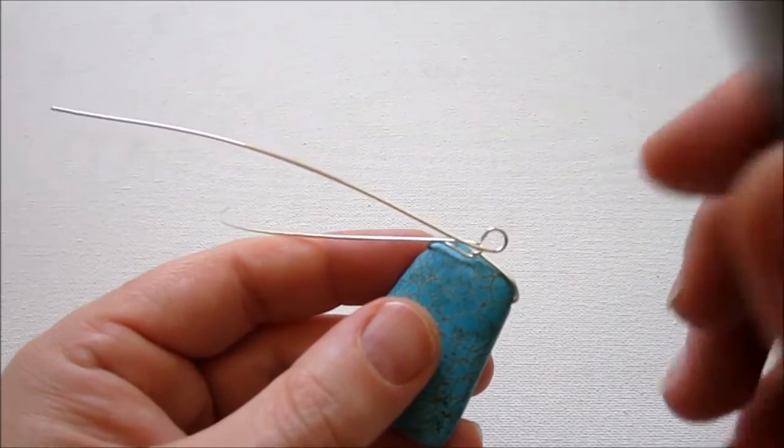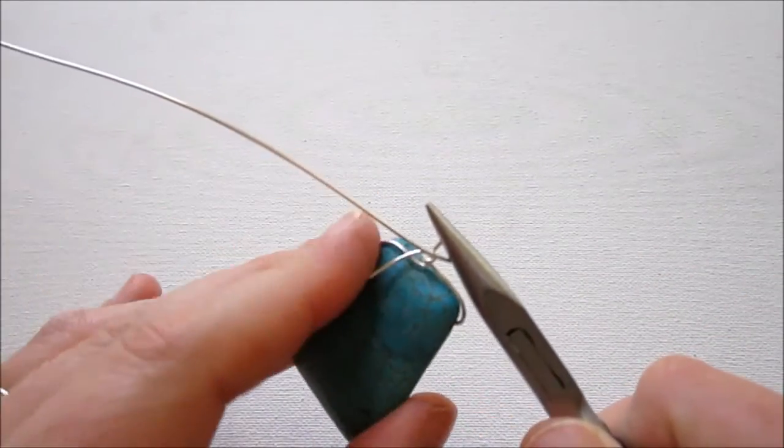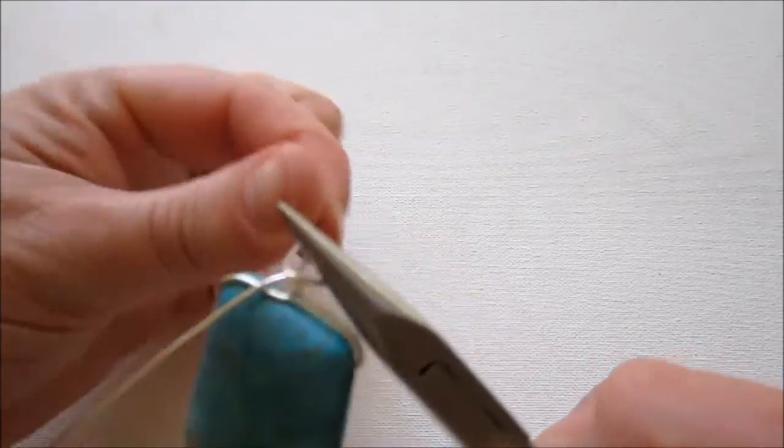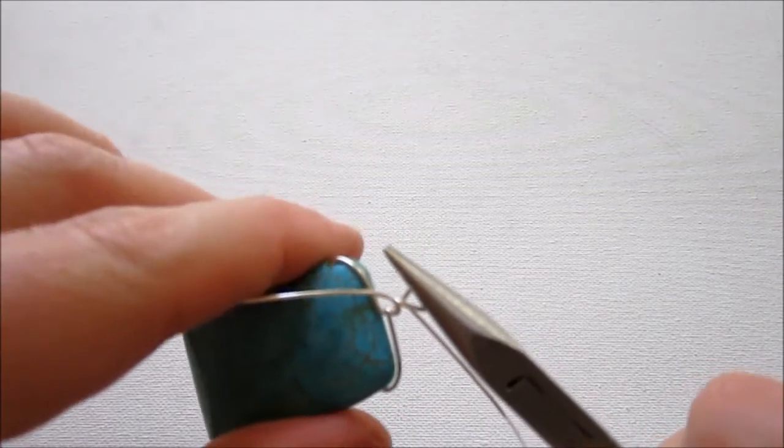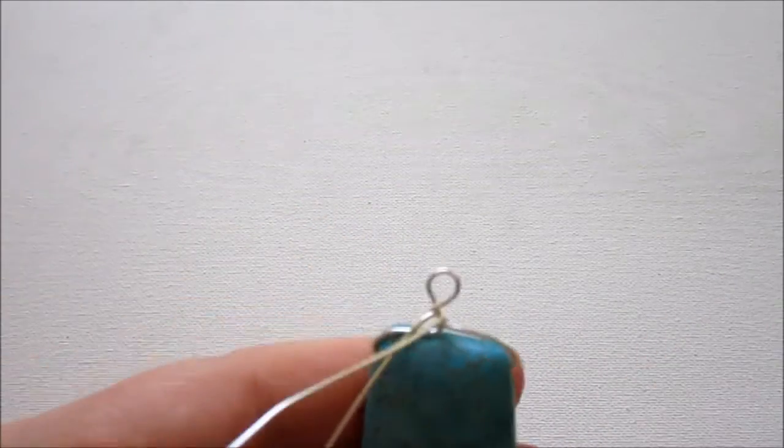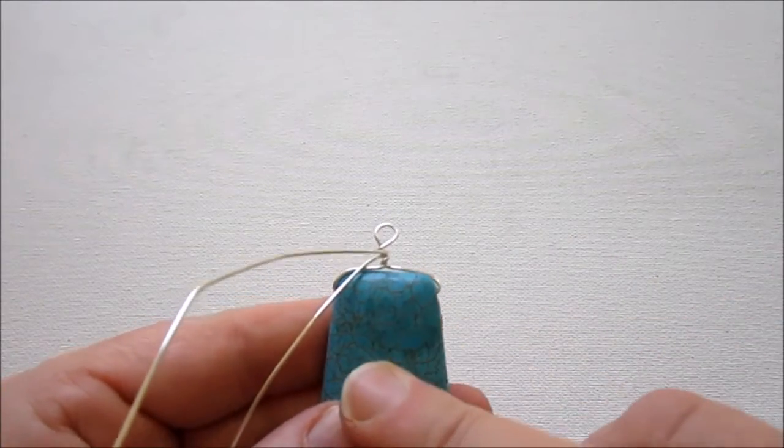And then we're going to switch over to chain nose. And so you're going to hold that loop that you just made in your chain nose pliers. And wrap around once. And while you do, pull the bead out straight. We're just straightening that loop so it's straight above our bead.